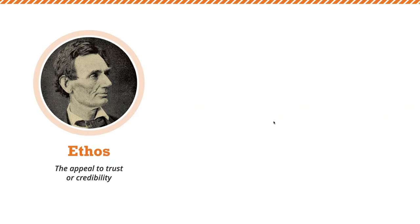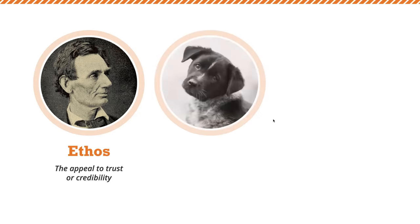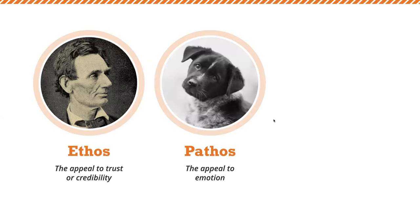The second appeal is to pathos — the appeal to emotions. Instead of saying 'I'm an expert,' you can say 'I'm really enthusiastic' — your passion is what will connect with the audience. So if you're a student without a lot of experience, you're going to sell yourself on your enthusiasm. That's a way to connect with the audience.